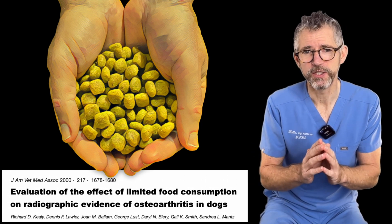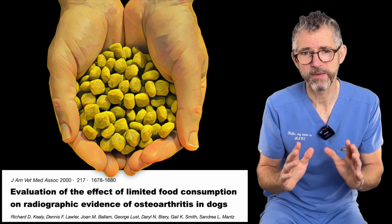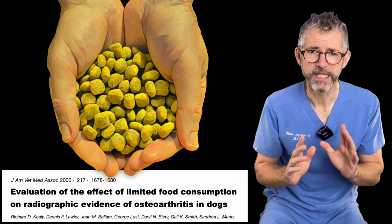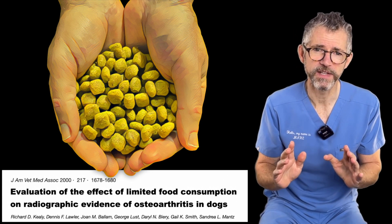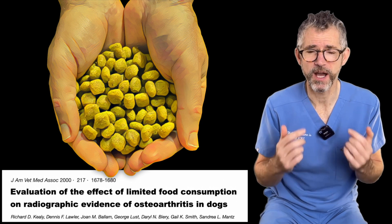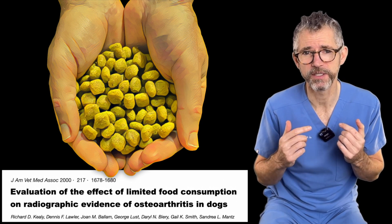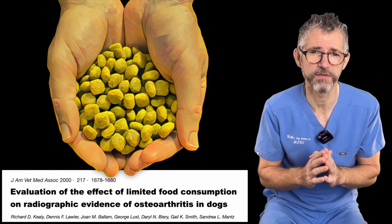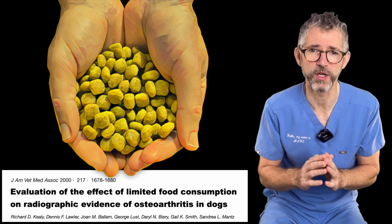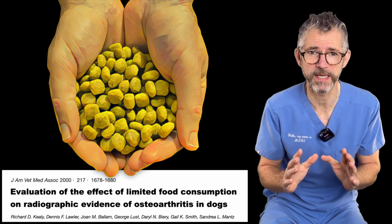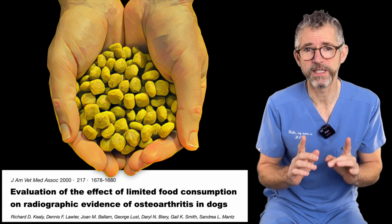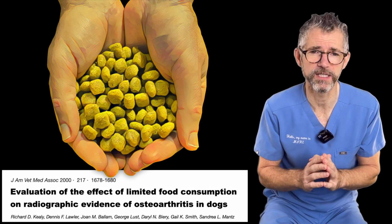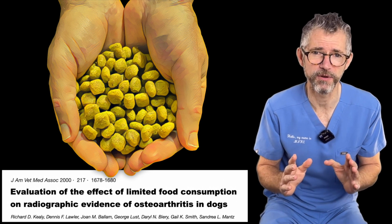This research used an experimental study design. Diligent control of multiple variables gives us the confidence to conclude that overfeeding causes expression of the genes which code for hip dysplasia, and that overfeeding causes an increased risk of osteoarthritis.